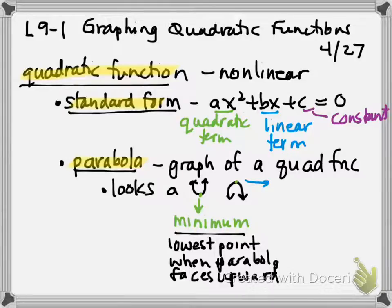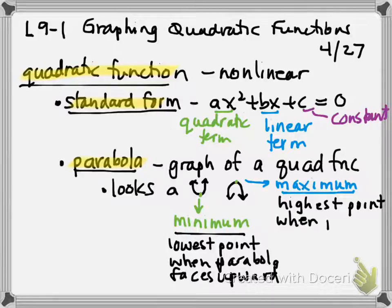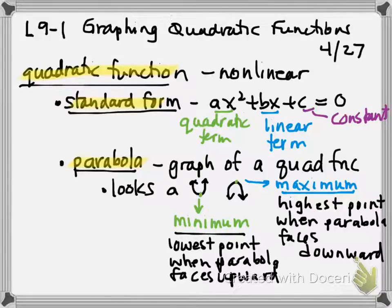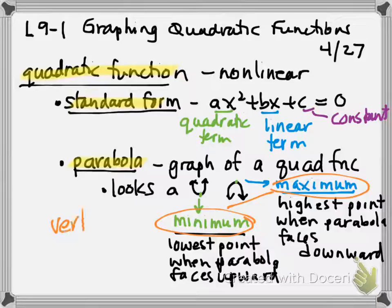The opposite of a minimum would be a maximum. For example, because of how long I've taught, I'm at the maximum on the pay scale. So there's no, I can't get further unless there's raises. This is the highest point when the parabola faces downward. These points also have a generic name. Both the minimum and maximum are together called the vertex.